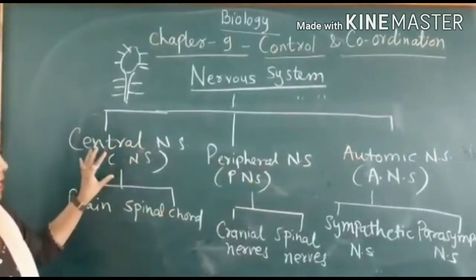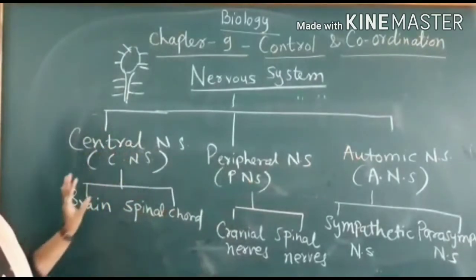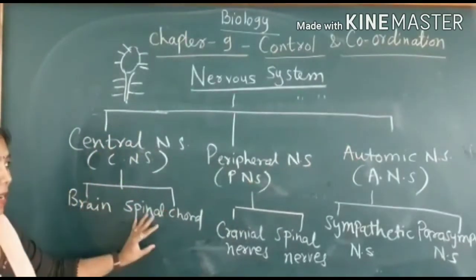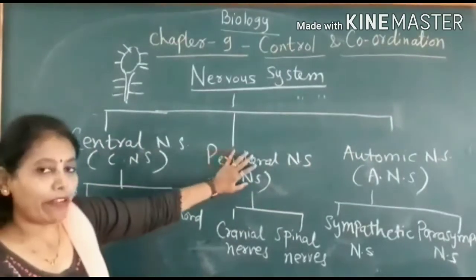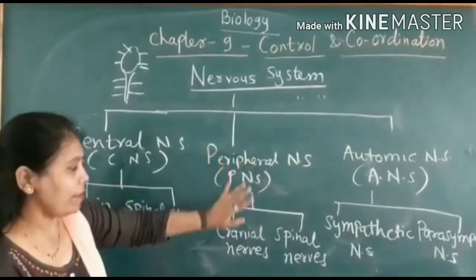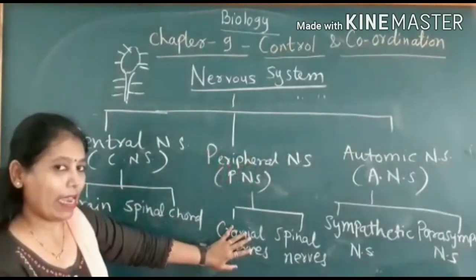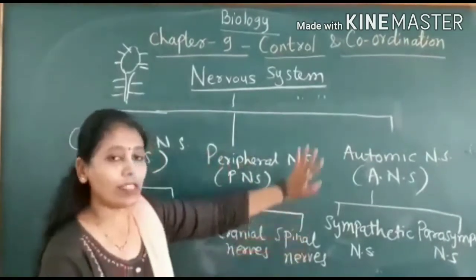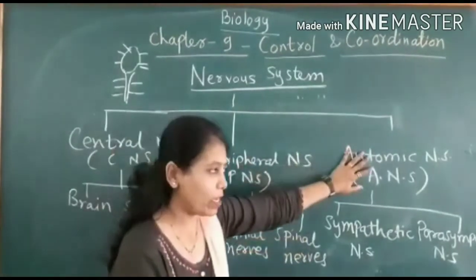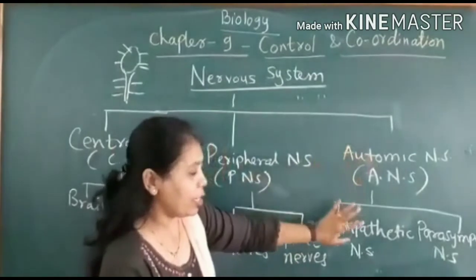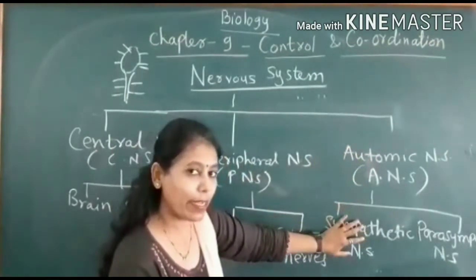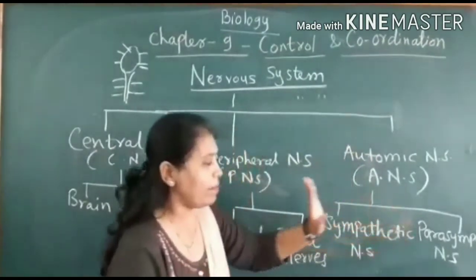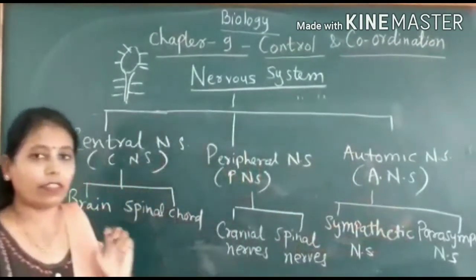To summarize: the central nervous system (CNS) consists of the brain and spinal cord; the peripheral nervous system (PNS) includes cranial nerves and spinal nerves; and the autonomic nervous system (ANS) includes the sympathetic nervous system and parasympathetic nervous system.